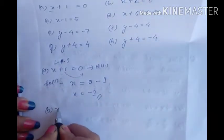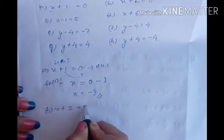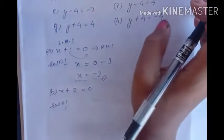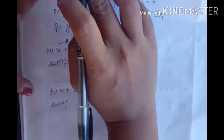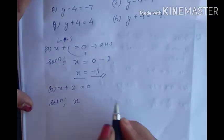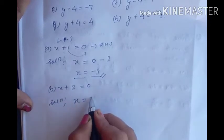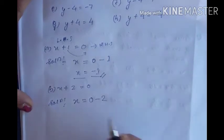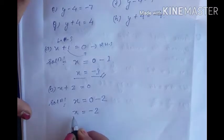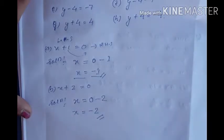For B: x plus 2 equal to 0. We have to separate the variable. The variable stays on the left hand side and the constant moves to the right hand side. So x equals 0 minus 2, which is minus 2. That is the answer for question B.